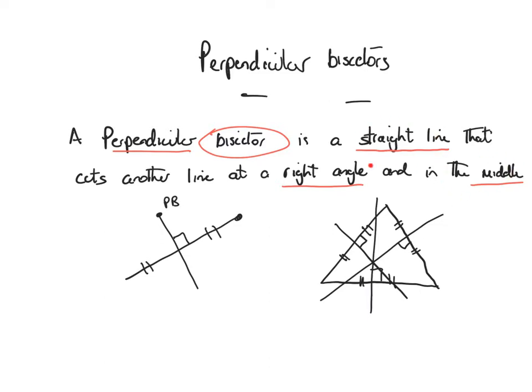Because a perpendicular bisector is a straight line, the two things we need to find its equation are a point and the gradient. For any straight line, to find its equation, you need a point that lies on the line and the gradient, so that you can go into y minus b equals m bracket x minus a.